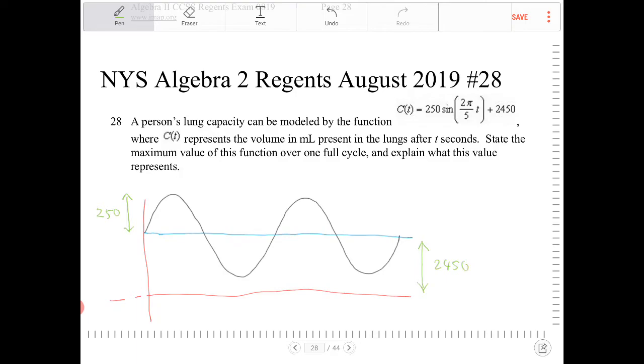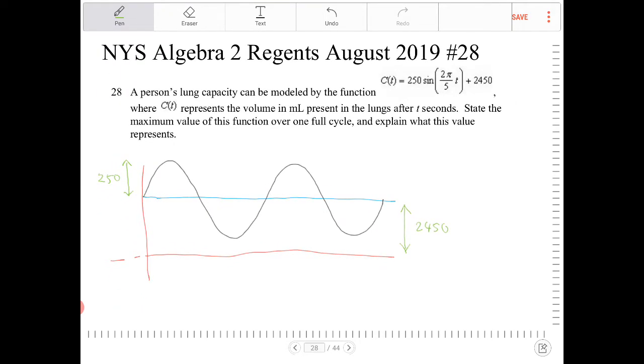The question here is, state the maximum value of this function over one full cycle and explain what this value means. So, what this implies then is the maximum, therefore, is going to be 2450 plus 250.